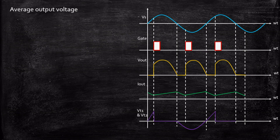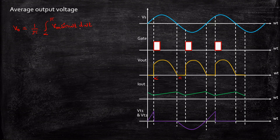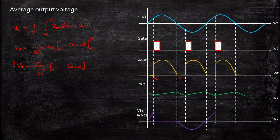Now let us look at the analysis part. We are going to derive the average output voltage expression. The output voltage exists from alpha to pi, so Vout_average equals (1/π) times the integral from alpha to pi of Vm·sin(ωt)·d(ωt). Taking Vm outside, integration of sin(ωt) gives minus cos(ωt) evaluated from alpha to pi. The result is Vout_average equals (Vm/π)(1 + cos α). This is the average output voltage expression.